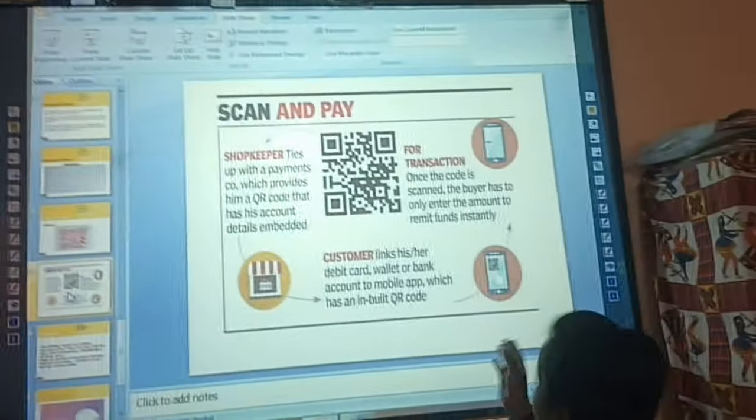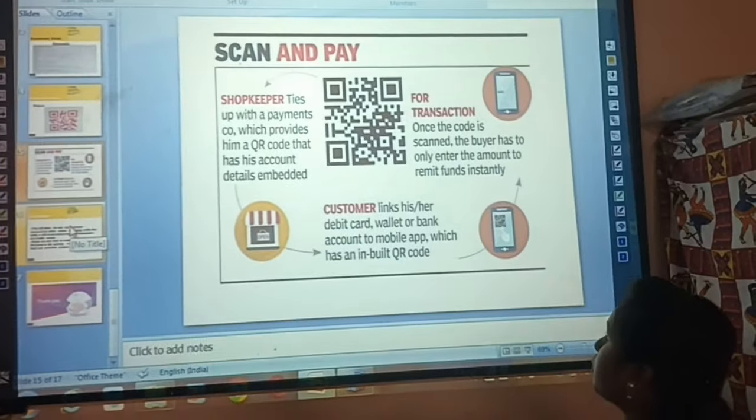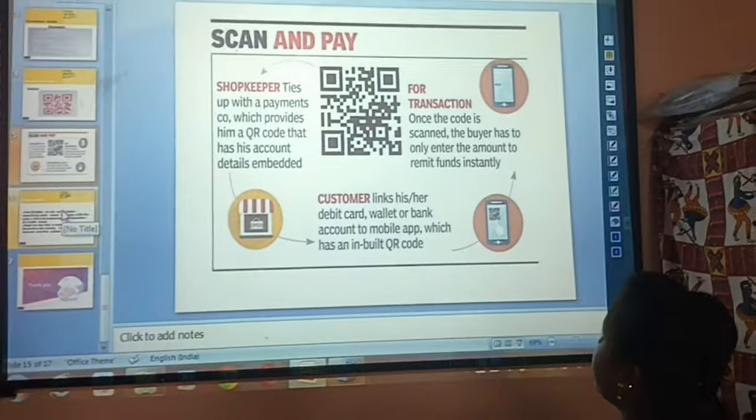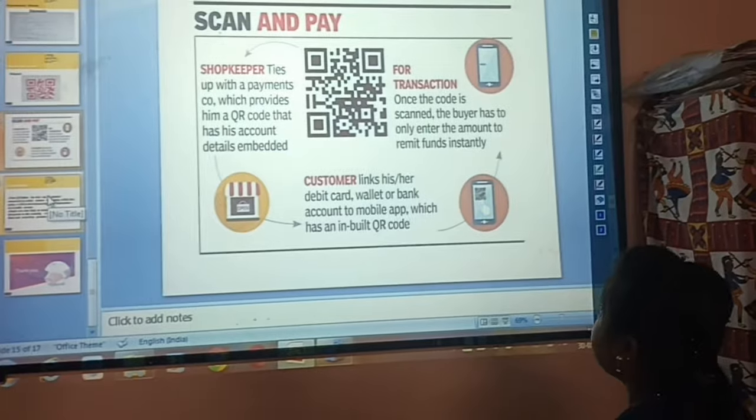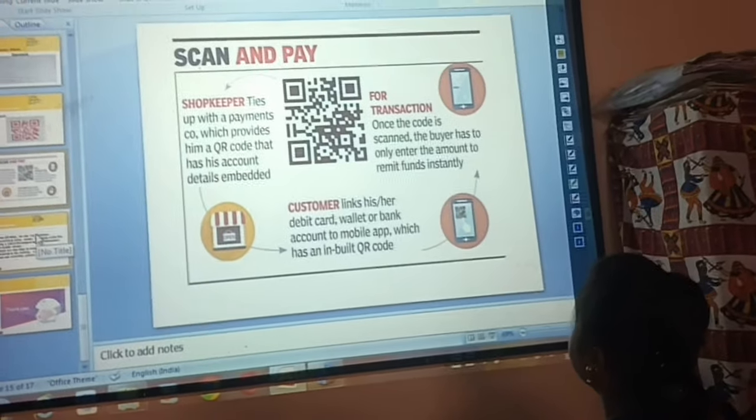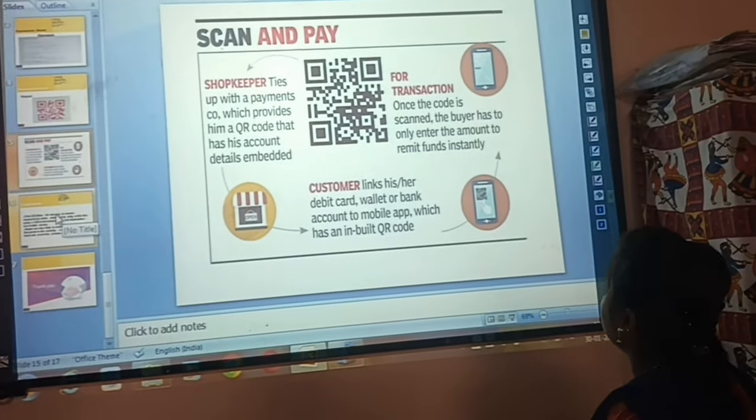Now we can see scan and pay. Shopkeeper: tagged with a payment code which provides a QR code that has account details embedded. Customer: links their debit card, prepaid or bank account to mobile app which has an inbuilt QR code. Per transaction: once the code is scanned, the buyer only needs to enter the amount to complete the transaction.